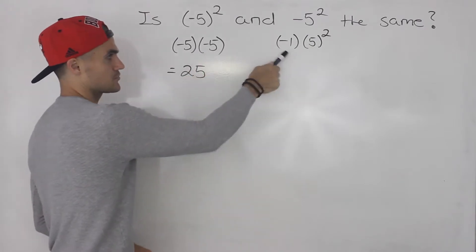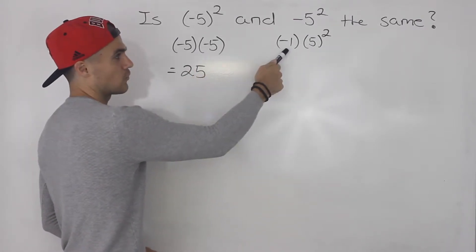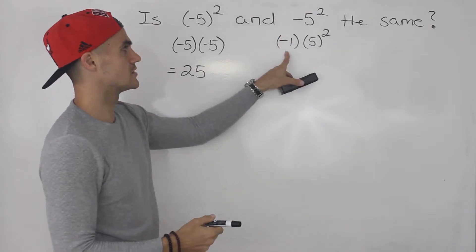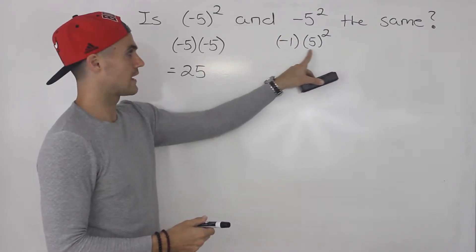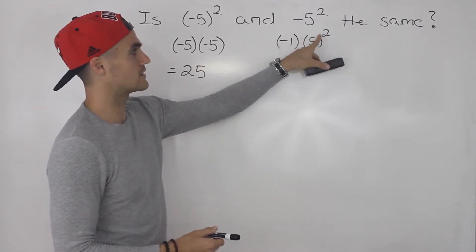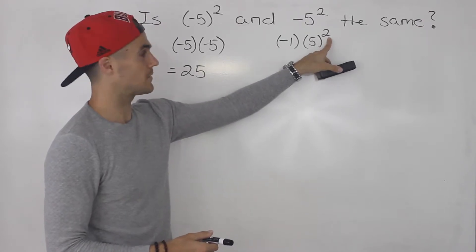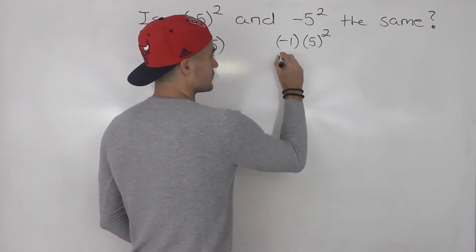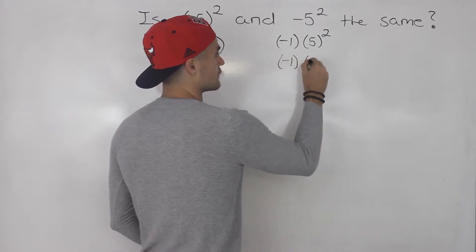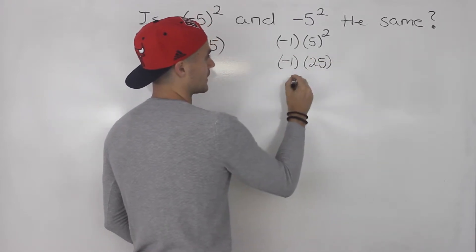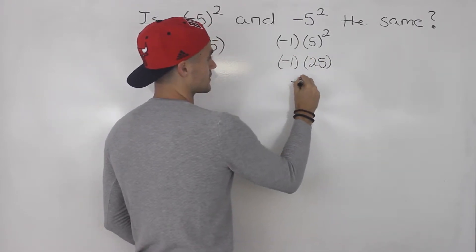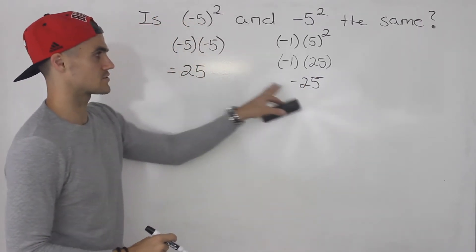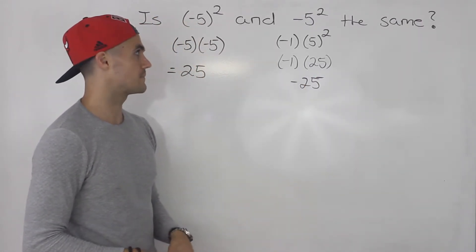See the difference between these — there's a negative one here in front. So whenever you see something like this, just put that negative one in front and then take that number to whatever the exponent is. So five to the power of two ends up being 25, and then we multiply by the negative one, so that ends up being negative 25. So the answers are different — they're not the same.